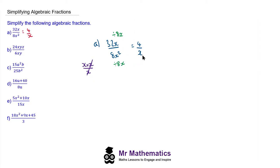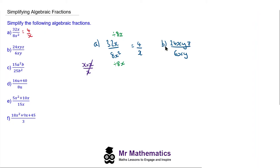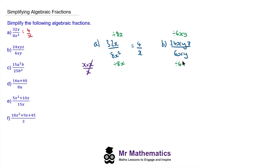Let's try question b. We now have 24xyz over 6xy. Again we need to find the highest common factor of the numerator and denominator. We can see that 6 goes into 24 and 6, so we can divide both by 6. And x and y are also common factors — we have xy in the numerator and xy in the denominator. So the highest common factor is 6xy.